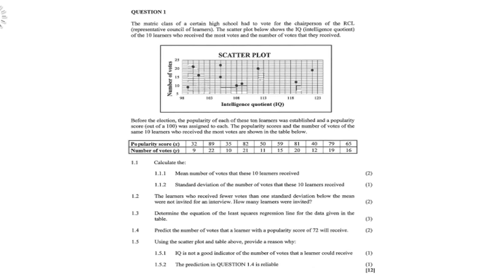Determine the equation of the least square regression line for the given data in the table. Predict the number of votes that a learner with a popularity score of 72 will receive. Using the scatter plot and table above provide a reason why IQ is not a good indicator of the number of votes that the learner could receive. And the prediction of question 1.4 is reliable.